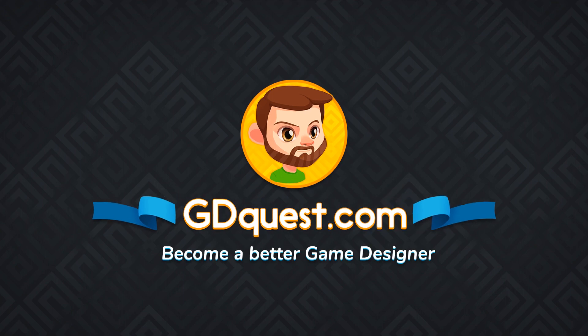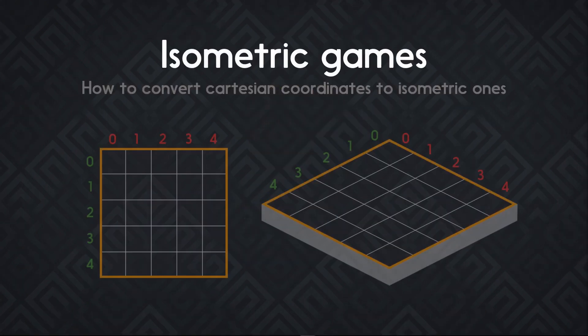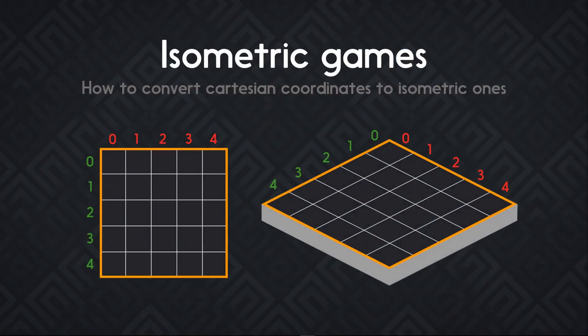We looked at top-down and side-scrolling movements, now it's time to talk about the isometric projection. We're going to see how to convert coordinates from the Cartesian system to the isometric one, and I'll show you how to write a simple function in Godot to achieve that.